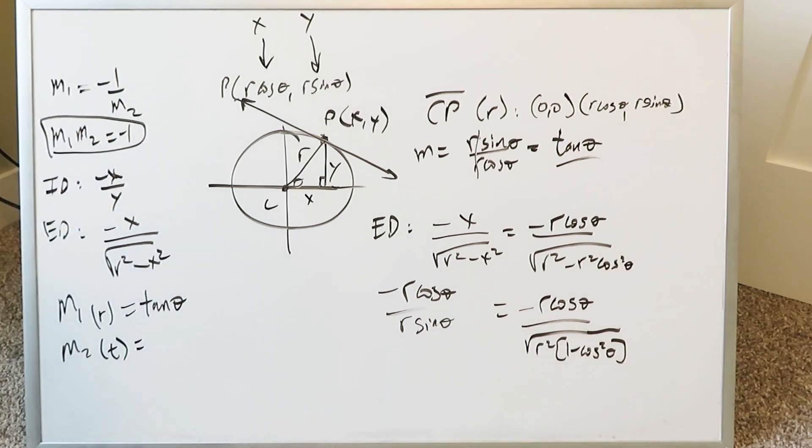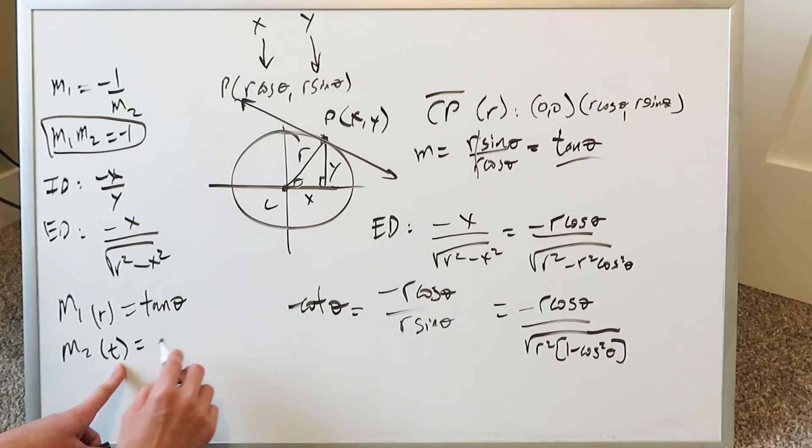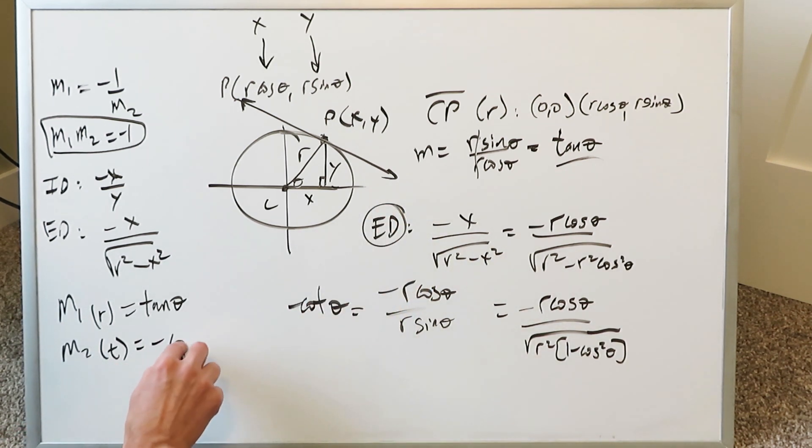You have the trigonometric identity helping you with that. When you do this right here, you get a minus cotan theta. This right here very well represents m2, the slope of your tangent line, utilized and derived from the explicit route, which is minus cotan theta.